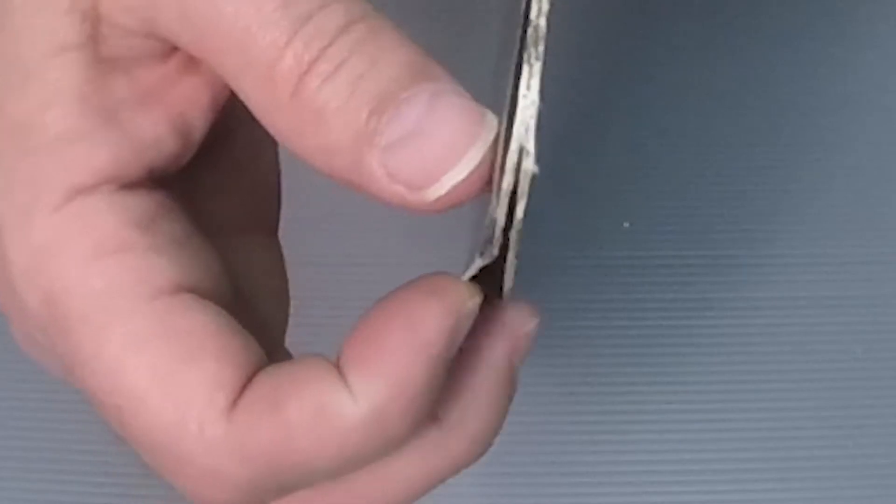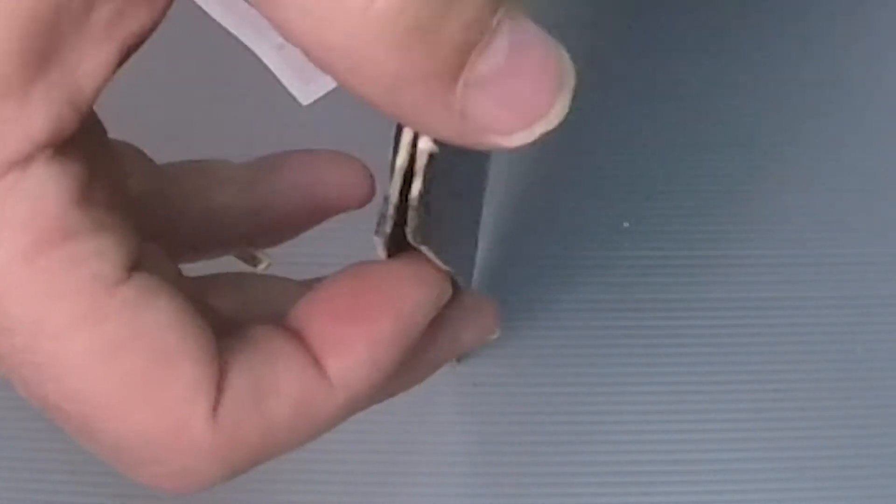You can see the seam is just beginning to split but not enough to warrant a major repair. Better to just use a sound sleeve to protect it. Let's move on to the inner sleeve.